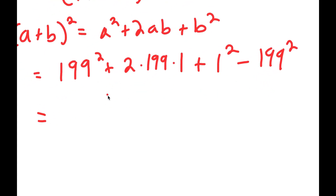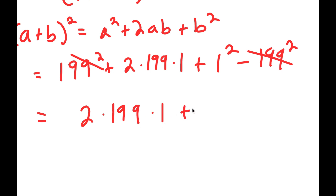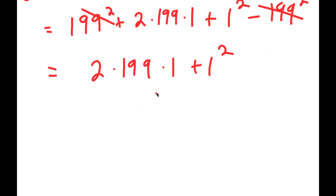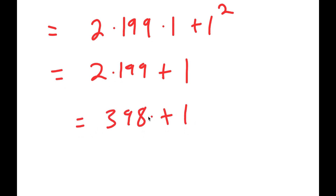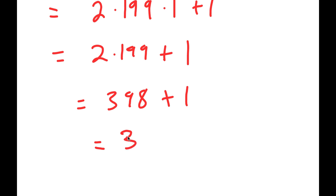Now this equals — we can cancel the two 199 squared terms — leaving two times 199 times one, plus one squared. Two times 199 times one is the same as two times 199, and one squared is just one. So I have two times 199, which equals 398, plus one, which equals 399. So my answer is 399. That was method one.